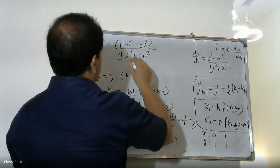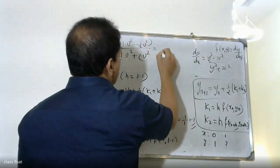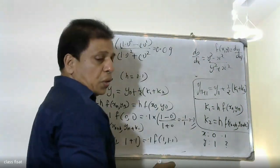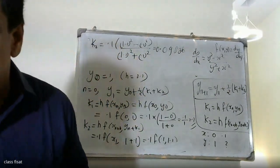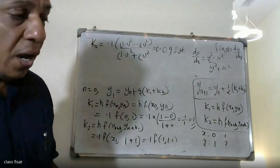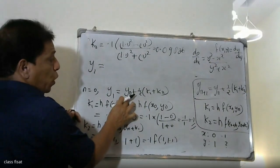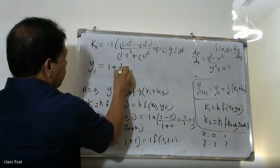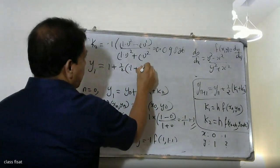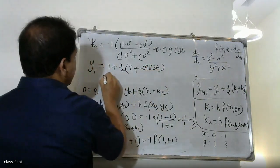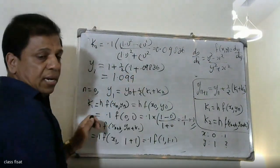Evaluating: y equals 1.1 squared minus x equals 0.1 squared, divided by 1.1 squared plus 0.1 squared. After computing, the result is 1.0992.